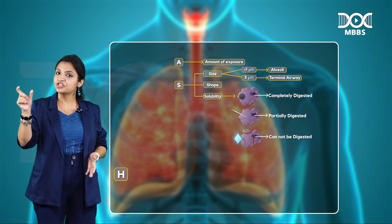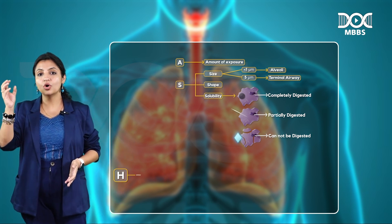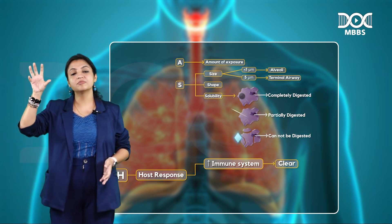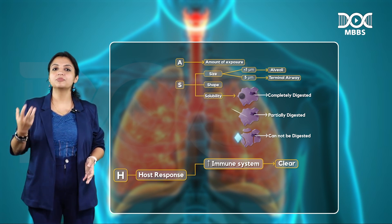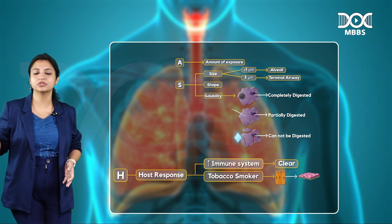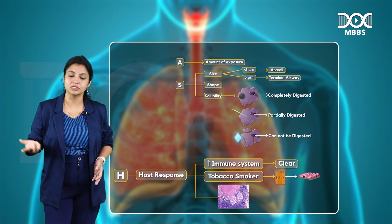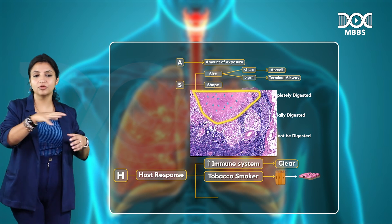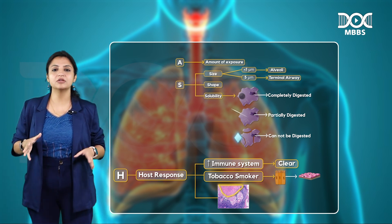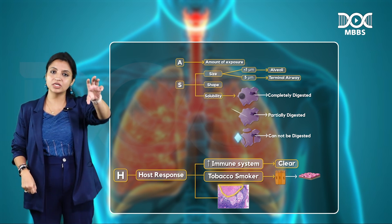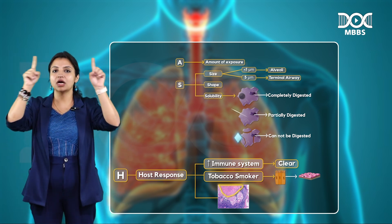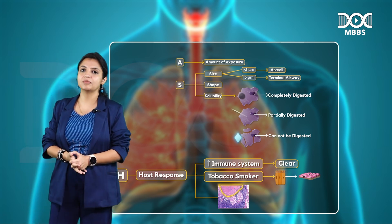H stands for host response. If your immune system is very strong, you are able to clear the dust. But if the patient is a cigarette smoker, their cilia are already damaged, so they cannot clear the dust effectively. If the patient has tuberculosis, it can interact with these dusts and produce different effects. So host response is very important. To summarize, ASH — Amount of exposure, Size, Shape, and Solubility of the particle, and Host response — defines the effects of dust inhalation.